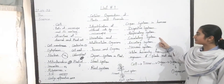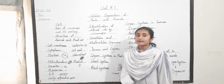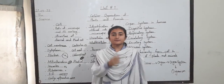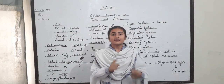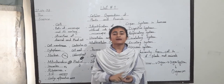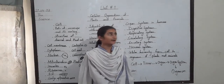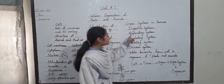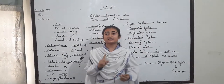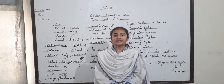Organ systems in humans include the digestive system, respiratory system, circulatory system, excretory system, and nervous system. The digestive system is the process by which food is digested; its organs include the stomach, small intestine, large intestine, esophagus, and mouth. The respiratory system is the process of breathing; it includes the lungs, trachea, larynx, pharynx, and alveoli.